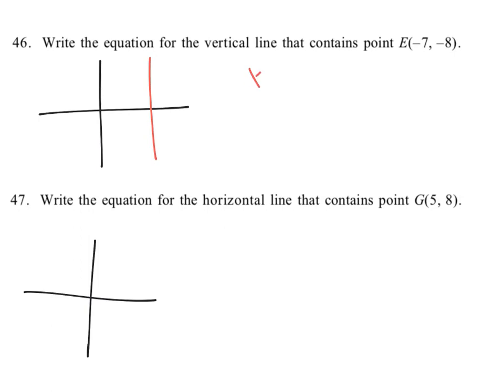You can hopefully see that easily. So your equation is going to say x equals whatever you're crossing. You just look at the point and say, what is the x-coordinate of that point? The x-coordinate is negative 7, so it's x equals negative 7. That is your equation.